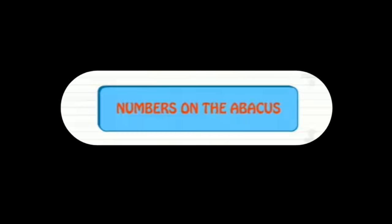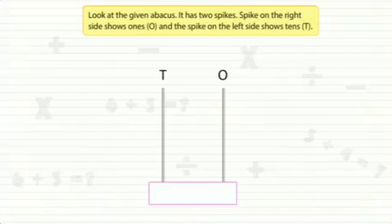Look at the given abacus. It has two spikes. The spike on the right side shows ones, and the spike on the left side shows tens.